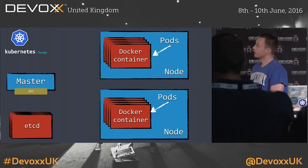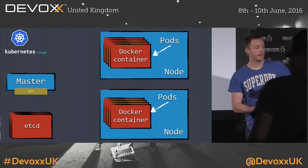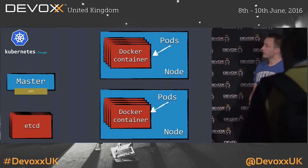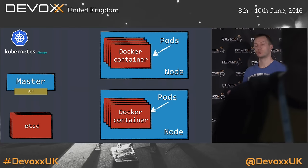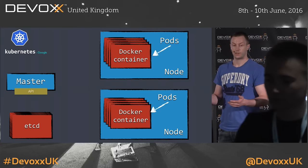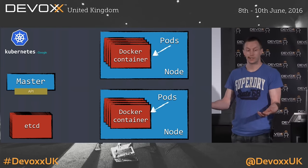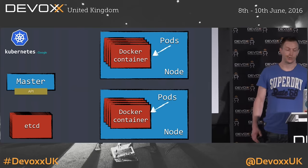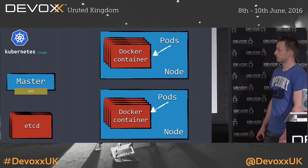If you look at a Kubernetes cluster, it typically at least has the following things. It has a master node, and this master node is kind of in control of the whole cluster. The master node decides where containers get scheduled. It actually does the scheduling. And very importantly, it runs the API server, and that's what we're going to use later on.